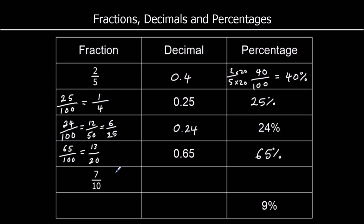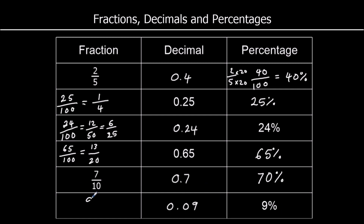And 7 tenths: 7 divided by 10 is 0.7, and 0.7 times 100 is 70%. For 9 over 100: 9 divided by 100 is 0.09. As a fraction it's 9 over 100. 9 and 100 are not in the same times table, so that is as simple as it gets.